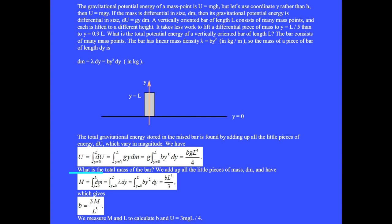What is the total mass of the bar? We add up the little pieces of mass dm: total mass M equals the integral of dm equals the integral of lambda·dy equals the integral of b·y²·dy equals b·l³ over 3, which gives b equals 3M over l³. That makes the total potential energy u equals three-quarters M·g·l.